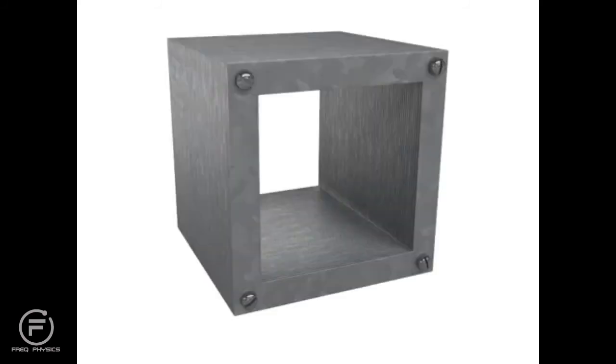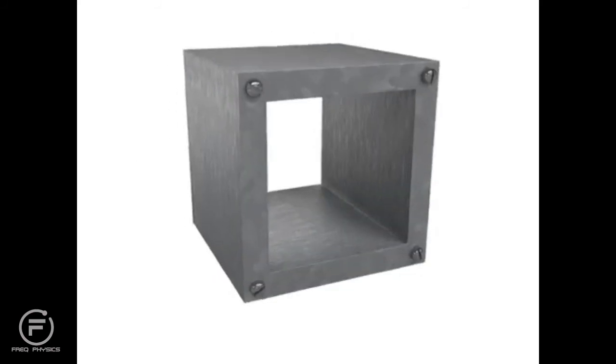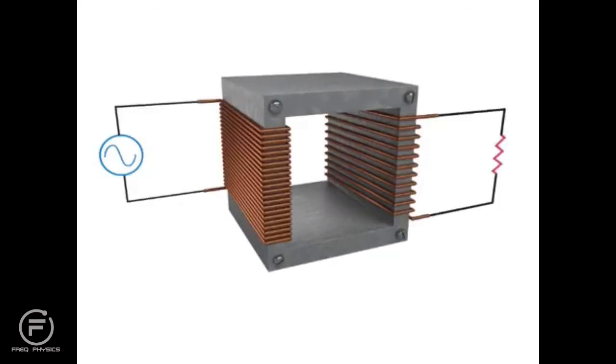Transformers are composed of an iron core ring wrapped in coils. One coil is connected to an AC input voltage and is called the primary coil. The other coil is connected to an output circuit with a load resistance and is called the secondary coil.